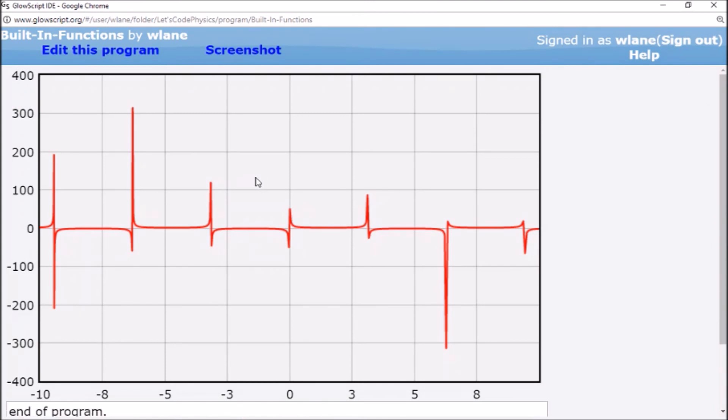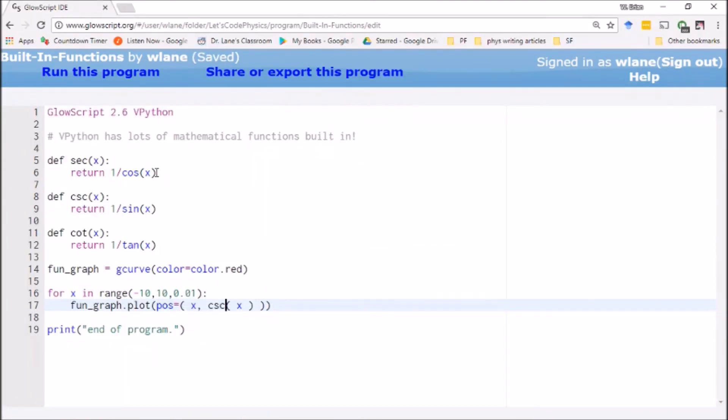There we go. And of course, if you wanted other fancy functions, like if you wanted sine squared, cosine squared, etc., you can define those as additional functions as well, however you like. I have another video that I'll link to about using this function definition. It's pretty straightforward.